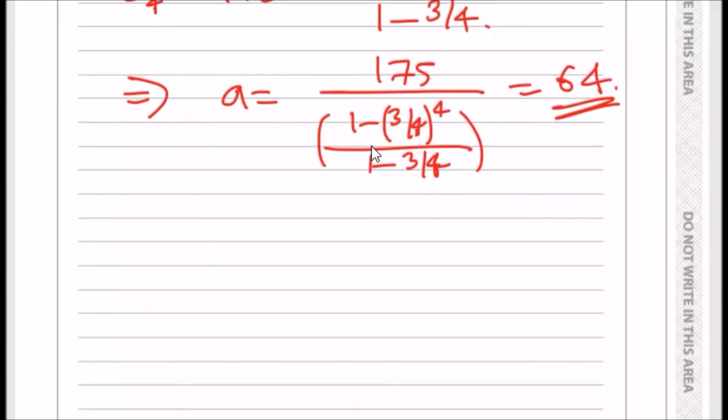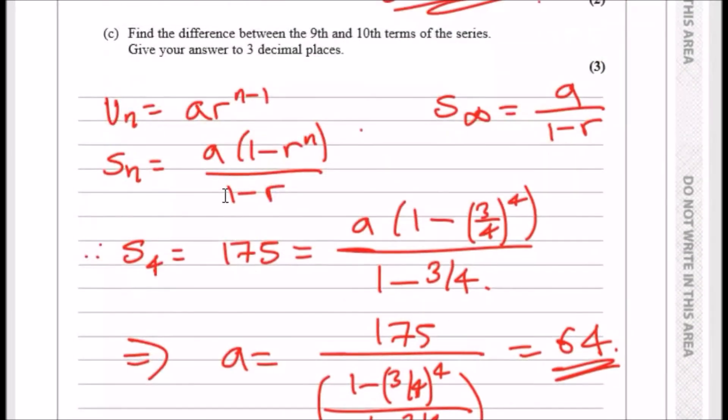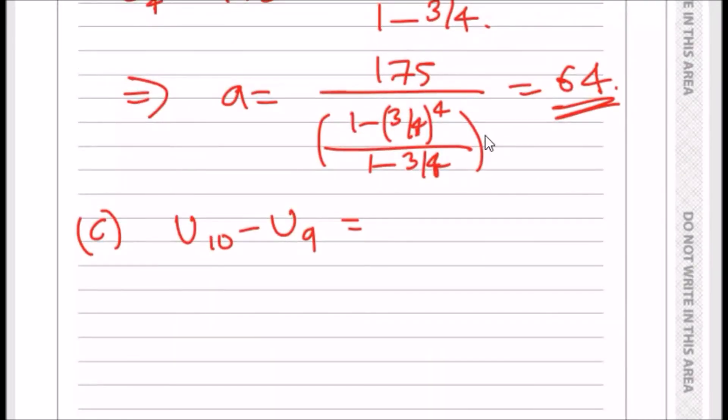So here, for part C, we can just say U10 minus U9. Doesn't make a difference. The value of U10 using the general formula is ar to the power of n minus 1. So it's going to be a, which is the first term, which we found out was 64, times r, which is three quarters, to the power of n minus 1, which is 10 minus 1, which is 9. And all of this minus the same thing, but to the power of 8.